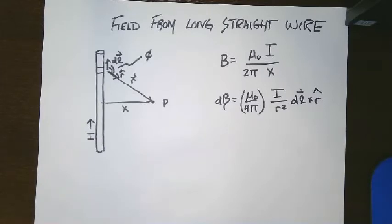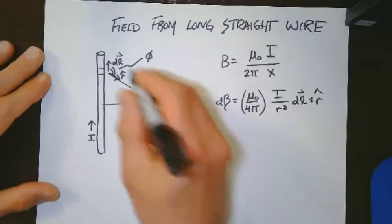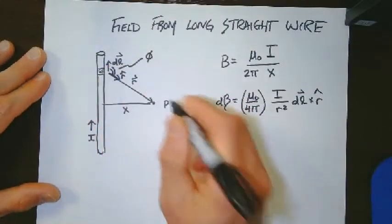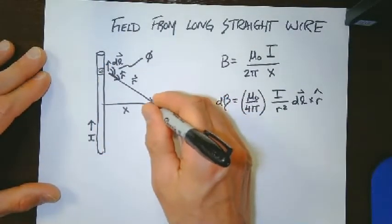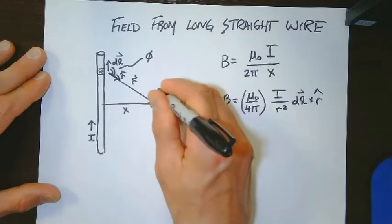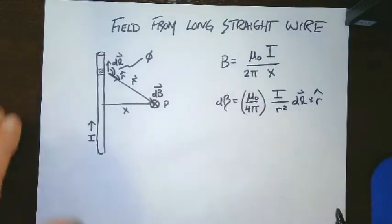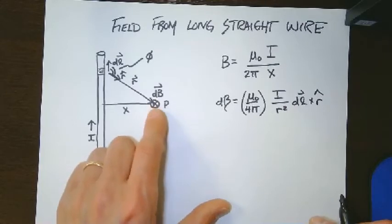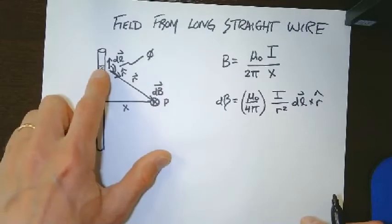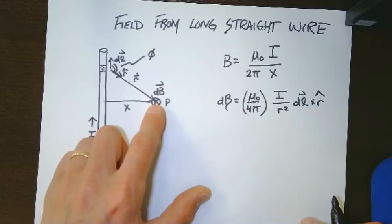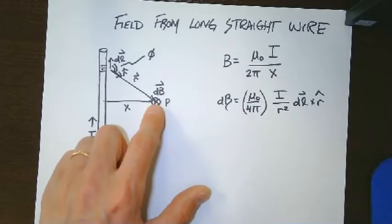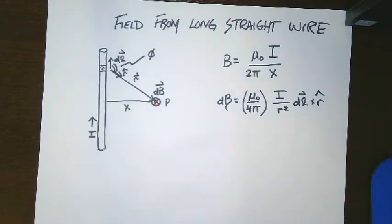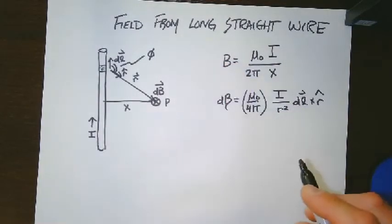Now, what else do we have to do here? So this chunk, this piece here, is going to produce a dB that goes into the page away from us. I will leave that to you as an exercise in the right-hand rule. You should be able to show that this chunk produces a magnetic field that goes away from you into the page.